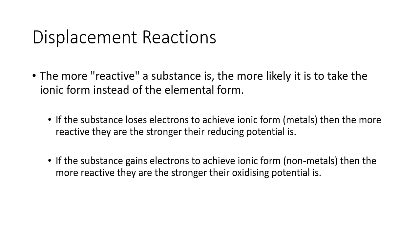The more reactive a substance is, the more likely it is to take the ionic form instead of the elemental form. If a substance loses electrons to achieve ionic form — that's the metals — then the more reactive they are, the stronger their reducing potential is. So more reactive metals like sodium and potassium have the strongest reducing potential.